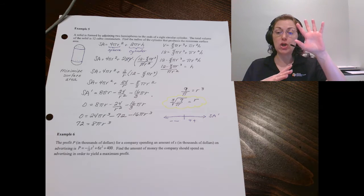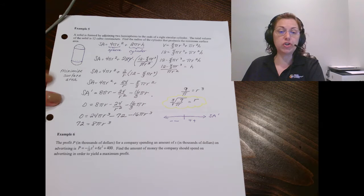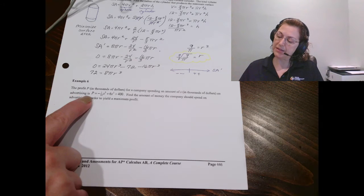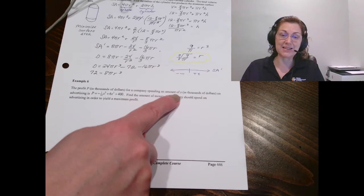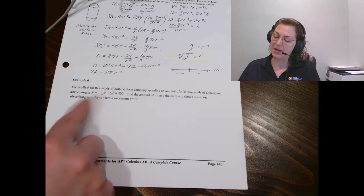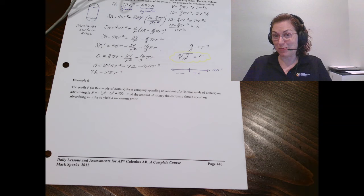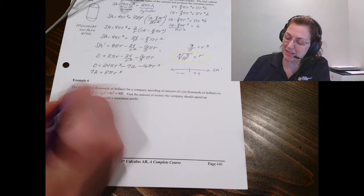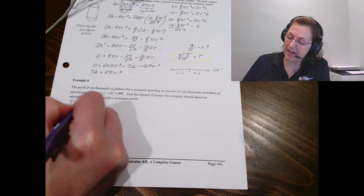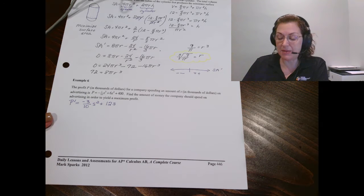So remember the whole idea is you have a primary equation and then you use a secondary equation to eliminate a variable. Let's look at example six next. We're told that the profit in thousands of dollars for a company spending an amount s in thousands of dollars on advertising. So here's my profit equation based on the amount that they spend on advertising. Find the amount of money the company should spend on advertising to yield a maximum profit. Beautiful part of this is they've already done the work for you by giving you the profit equation. We just have to find the maximum. So let's find the derivative, which would be -3/10s² + 12s.